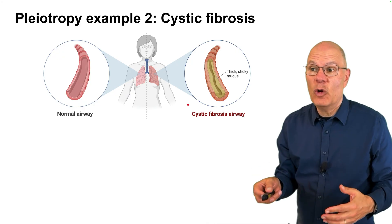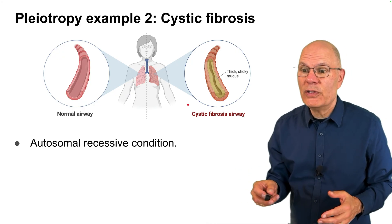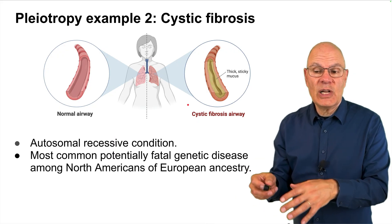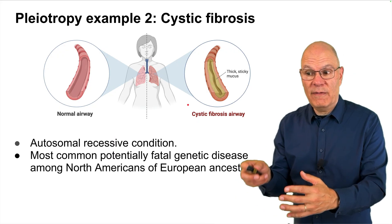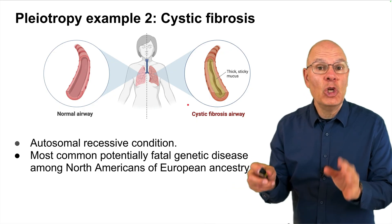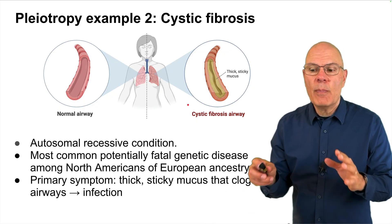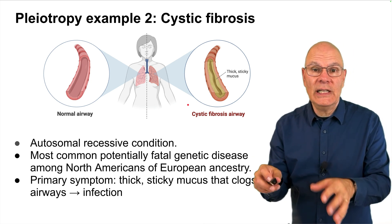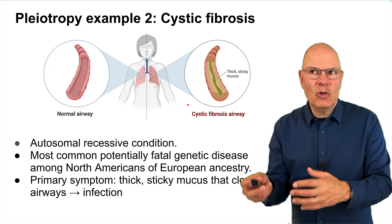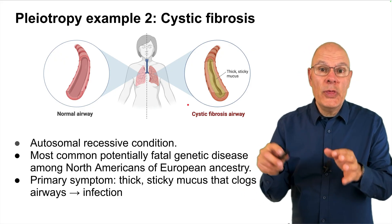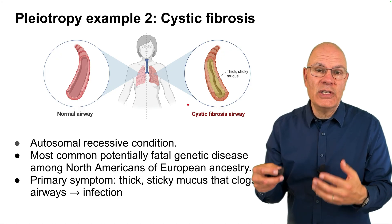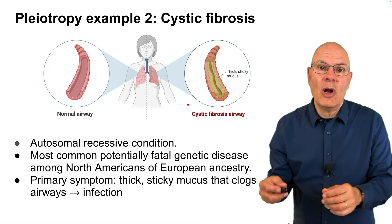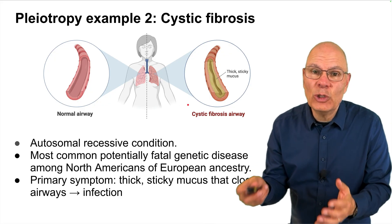Our second example of pleiotropy is the genetic disease cystic fibrosis, again an autosomal recessive condition. Cystic fibrosis is the most common potentially fatal genetic disease among North Americans of European ancestry. The primary symptom is thick, sticky mucus that clogs airways, leading to infection. And again, in recent medical history, this disease has gone from being invariably fatal during childhood to one where people with the best medical care are now living nearly normal lifespans.